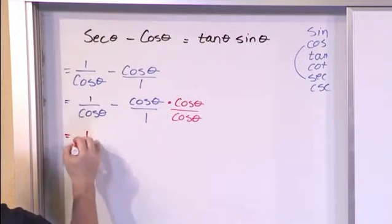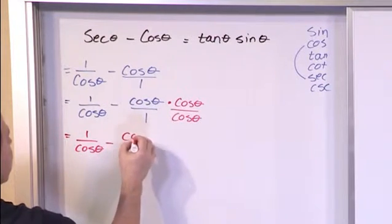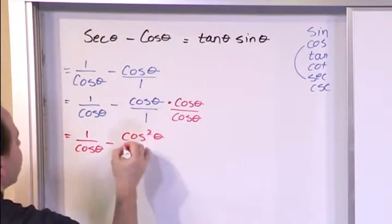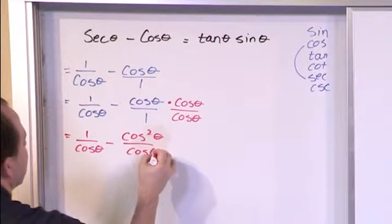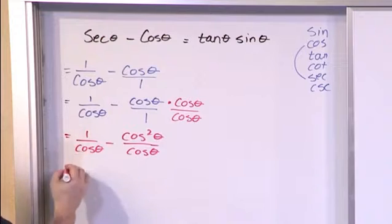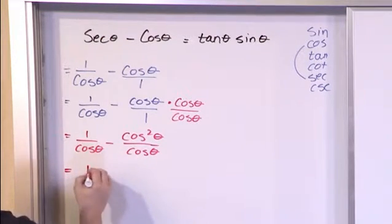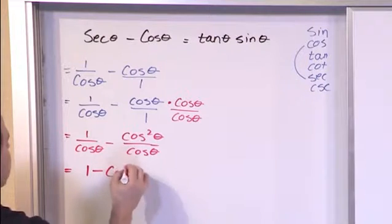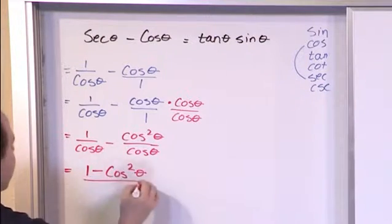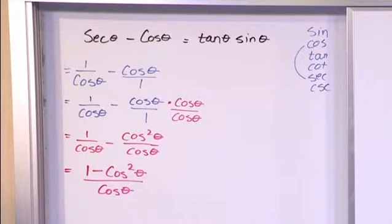So what I'm going to have is 1 over cosine of theta minus this is cosine squared on the top and this is cosine theta on the bottom. So here I've manipulated what I started with into something that I can really combine because now I have a common denominator. So on the top it will just be 1 minus cosine squared of theta and on the bottom it will just be cosine of theta because I keep the same common denominator.